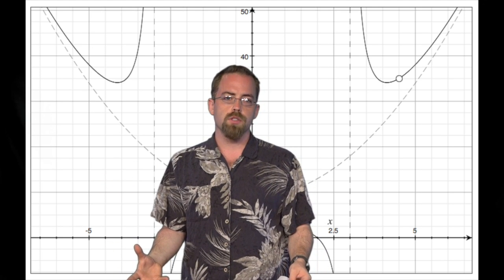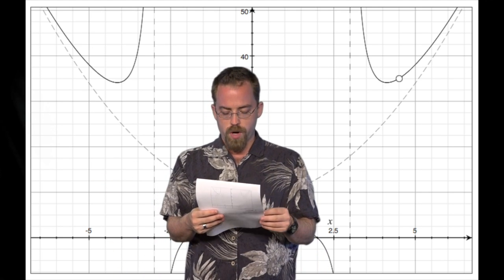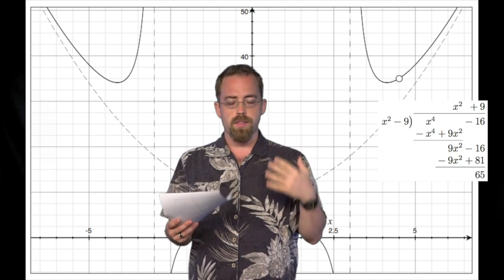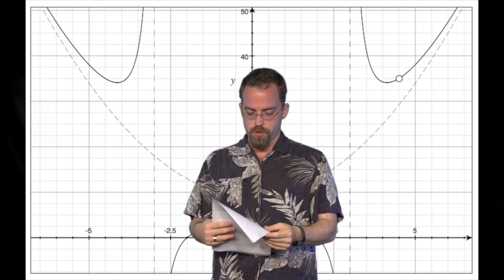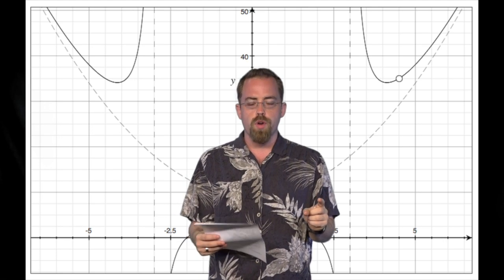Again, trying to divide by 0 makes an asymptote. But now, the craziest part is that if you divide the numerator by the denominator, then you get x squared plus 9 with a remainder, and that makes this whole big parabolic asymptote. This is x squared plus 9 as an asymptote. So this is crazy here.